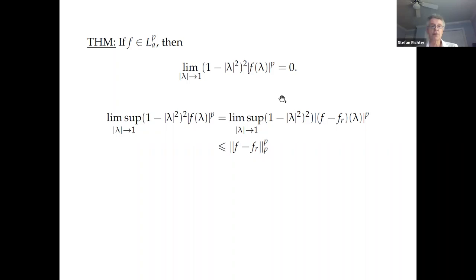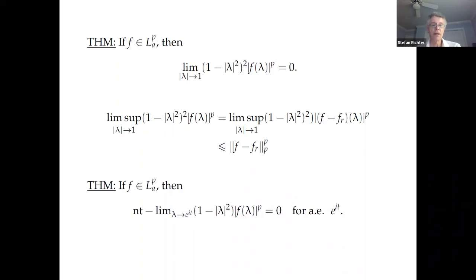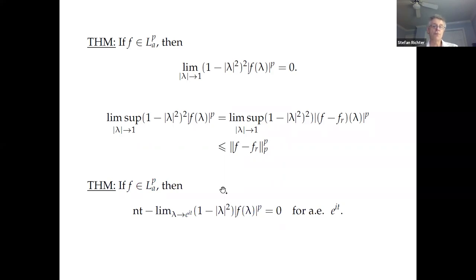That's the best unrestricted estimate. However, if you want a non-tangential limit instead of the unrestricted limit, and you fix a point at almost every boundary point, you can reduce the power by one. Instead of multiplying by the square of (1 - |λ|²), you multiply by just the first power, which is much larger, and you still get zero almost everywhere.